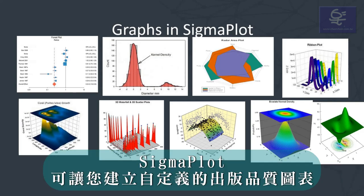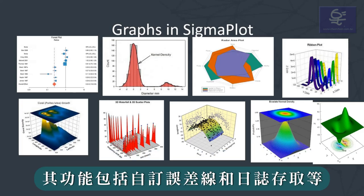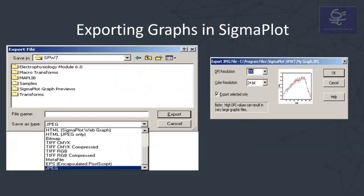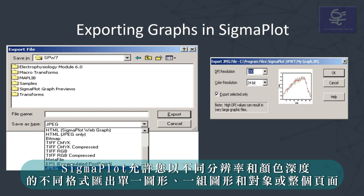Sigmaplot allows you to create a customized publication quality graph with features such as automatic error bars and log axes, and more. Finally, Sigmaplot allows you to export an individual graph, a group of graphs and objects, or an entire page in different formats with different levels of resolution and color depths.